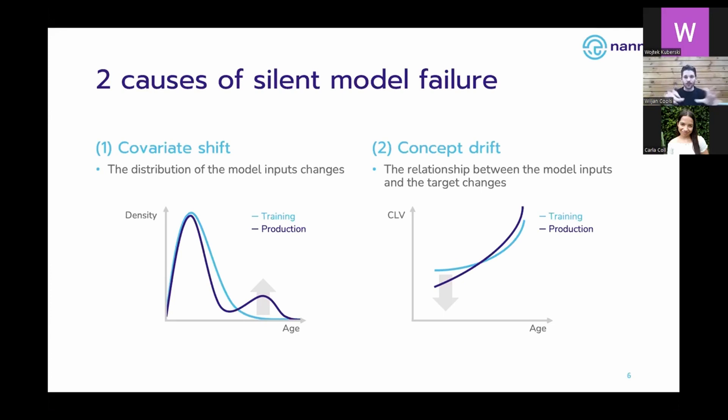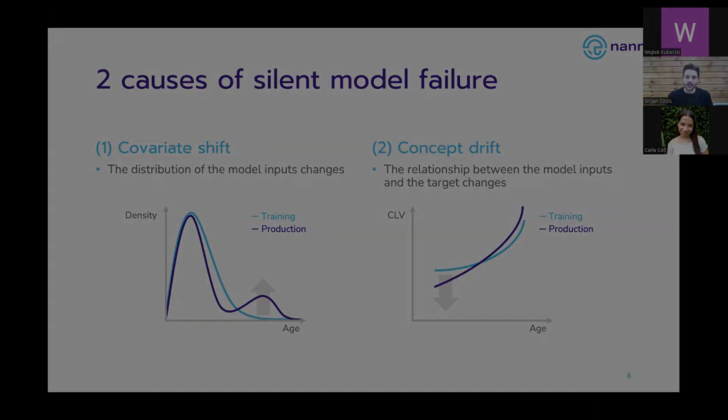These two types of issues — covariate shift and concept drift — can cause machine learning performance to deteriorate and our models to fail silently.